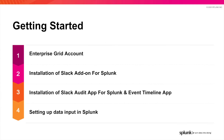Before we move on to the demonstration, I want to go over some items. Step one: ensure that you have an enterprise grid account with Slack — this will be necessary to access the Slack audit logs. We will then want to ensure that the Slack add-on for Splunk has been installed. Following that install, you will want to have the Slack Audit and Event Timeline app installed from Splunk Base. An add-on is meant to assist with bringing data in; an app is meant to help you leverage that data with pre-built reports and dashboards. Lastly, we'll walk through setting up the data input in Splunk. We also have a blog documenting all the steps discussed during today's Tech Talk.